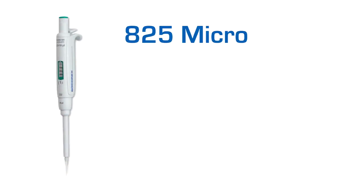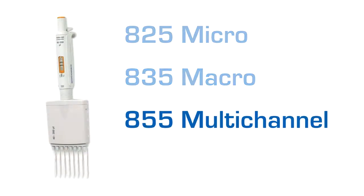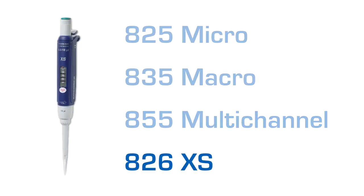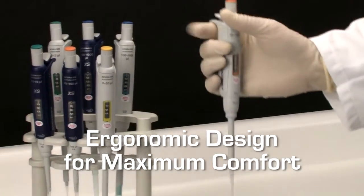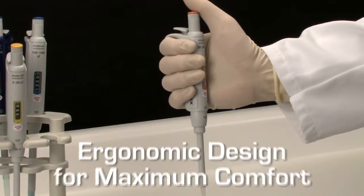Available in the well-known 825 micro, 835 macro, and 855 multi-channel models, and introducing the new 826 XS model for enhanced performance in research applications, Acura Manual Pipettes are designed and engineered to be comfortable and user-friendly as well as easy to maintain.